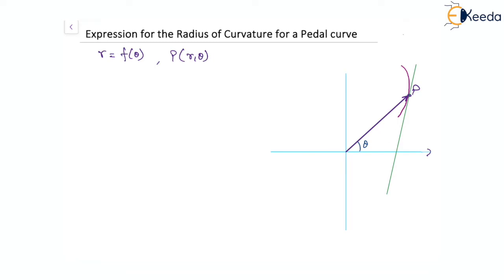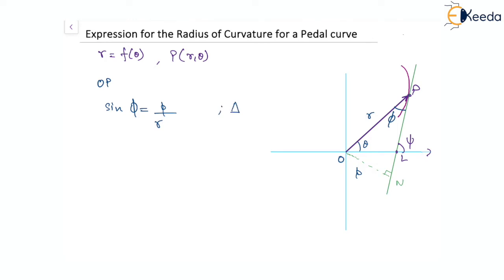The tangent at P meets the initial line at point L and makes an angle of psi, so the slope of this tangent is tan psi. If we drop a perpendicular from the pole to this tangent, it meets at point N. The radius vector OP has a length of r. The length ON, the perpendicular from the pole to the tangent at point P, is denoted p. The angle between the radius vector and the tangent is given by phi.